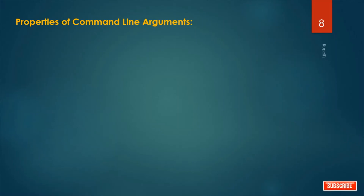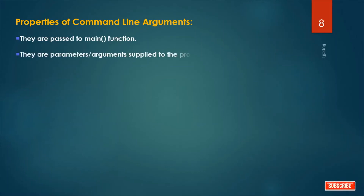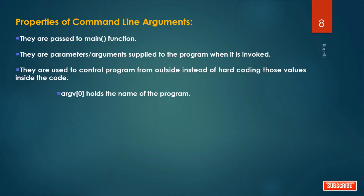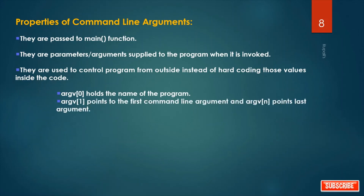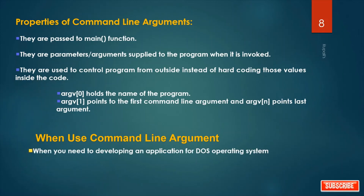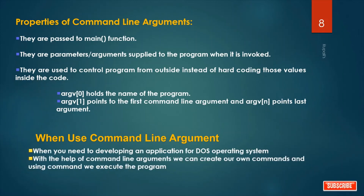Now, the properties of command line arguments: they are passed to the main function. They are parameters or arguments supplied to the program when it is invoked. They are used to control the program from outside instead of hard coding values inside the code — the input values are passed to the program from the command prompt. Argv[0] holds the name of the program, argv[1] points to the first command line argument, and argv[n] points to the last argument. Command line arguments are useful when developing applications for DOS or when you want to create custom commands to execute your program easily.